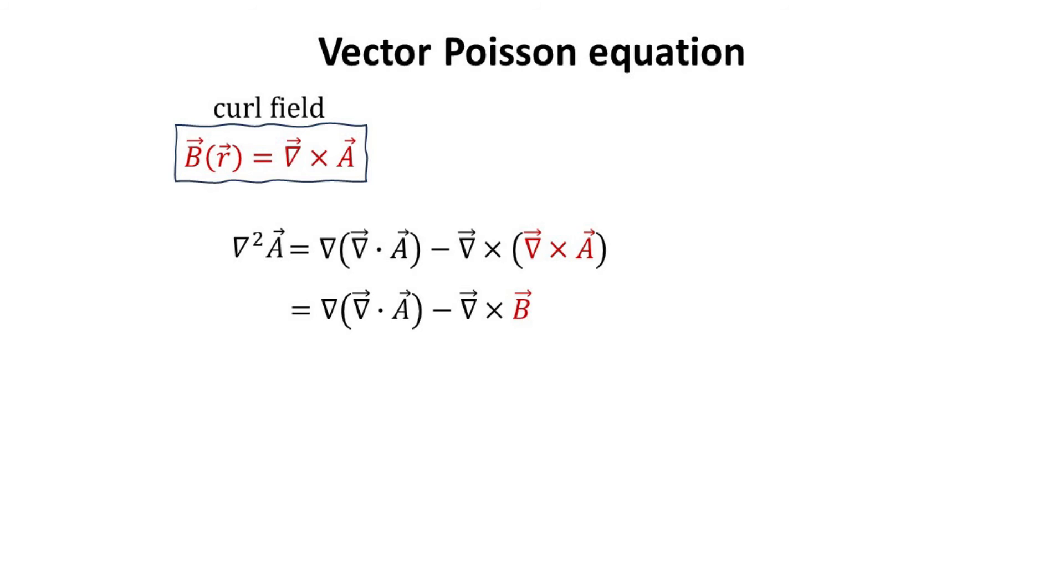As previously mentioned, the fact that the magnetic field is divergence-less allows us to write it as a curl field of a vector potential A. Ampere's law then allows us to relate the curl of B to the current density J.